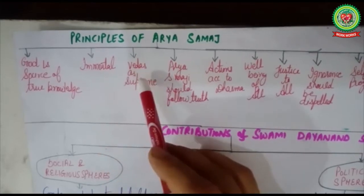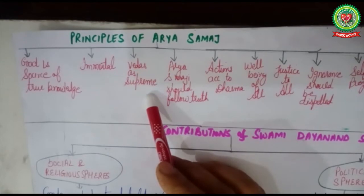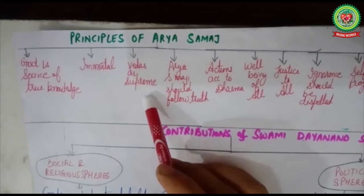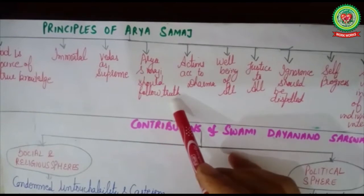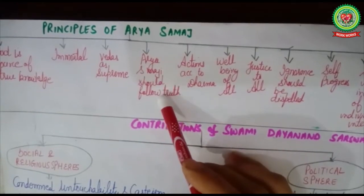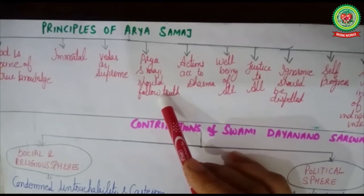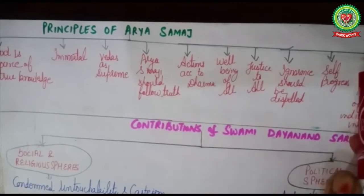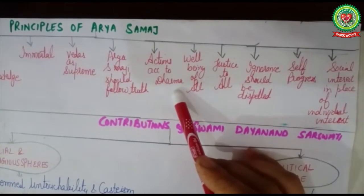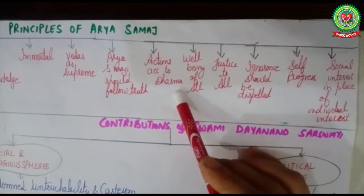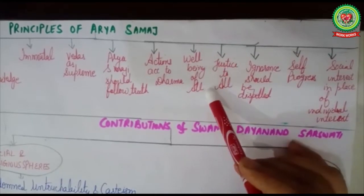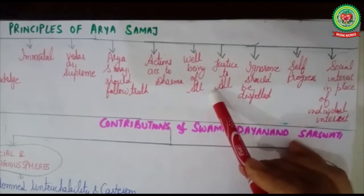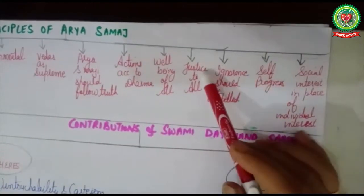Arya Samaj believed that the Vedas are supreme — we do not need to go to western countries to attain knowledge, as our Vedas are the true source. Members should follow truth and not the wrong path. Actions should be according to dharma — one should know what is right and wrong and choose the right action. Arya Samaj believed in the well-being of all, that all human beings should be treated and developed equally.